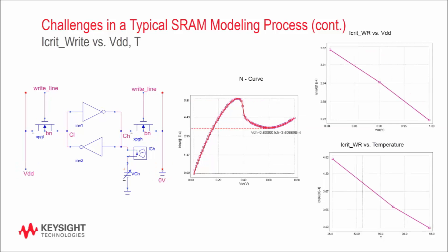Similarly, we get graphs for the critical write current, which is obtained from a slightly different bias condition as shown here. We apply VDD to one bit line and ground the other one. We then do an ICH-VCH sweep again and get the N-curve. And the critical write is defined as the lowest value in the valley area on the N-curve.